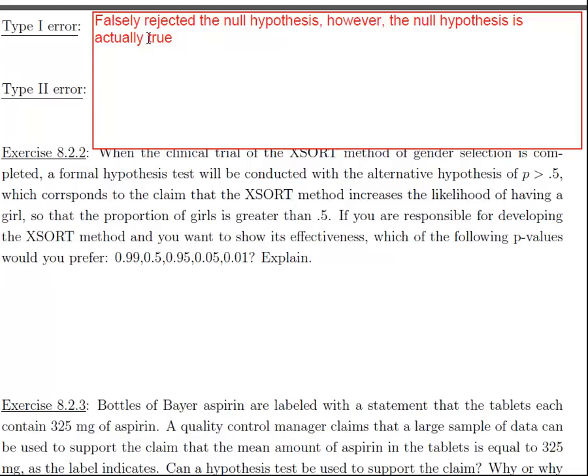A type 2 error is just the opposite. You falsely did not reject the null hypothesis. However, the null hypothesis is actually false. I know these are really confusing. You just have to keep in mind that when you have a type 1 or a type 2 error, it does mean that you made a mistake. It's not that you knew you make a mistake, but there's always that chance that it could happen. Those are the possibilities that do exist.